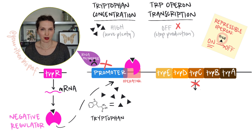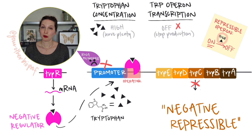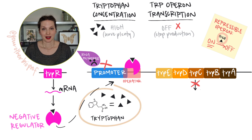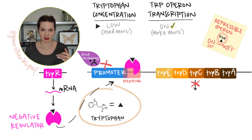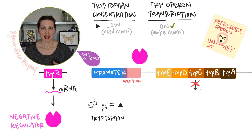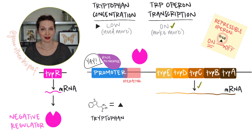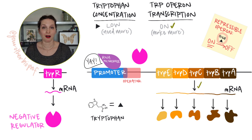That means that the trp operon is both negative and repressible — it's a negative repressible operon. And for more on that and the other types of operons, I'll link a video in the description. Once the cell starts to use up that backlog of tryptophan and the tryptophan concentration falls, tryptophan will fall off of the trp repressor and the trp repressor will leave the operator. And once it's out of the way, RNA polymerase can come in and do its thing.